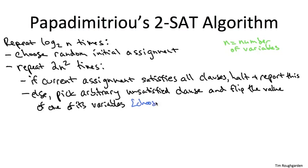So again, how do we modify the assignment? We choose an arbitrary unsatisfied clause. We pick one of the two variables in that clause uniformly at random. And we flip the value of that variable.